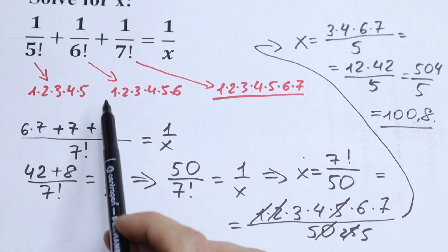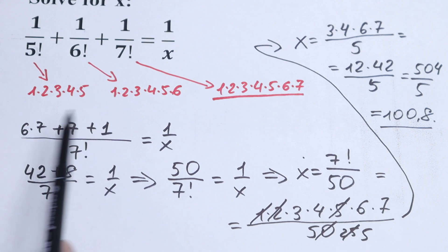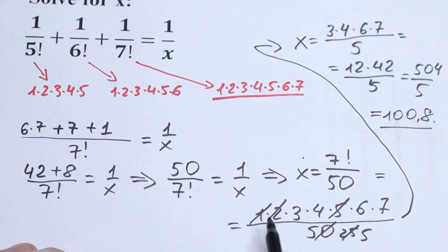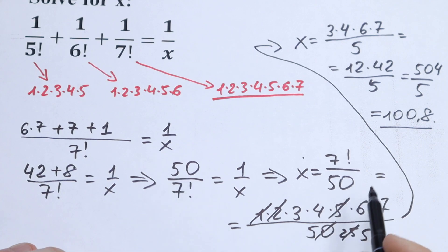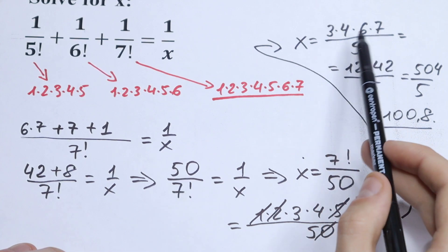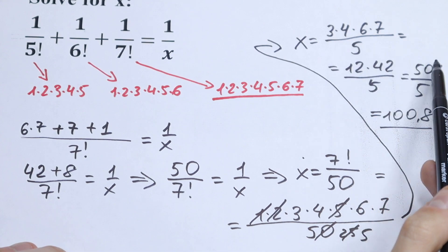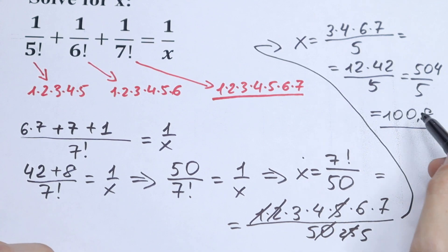First step: finding our common denominator, adding all of this in our denominator, and we get our equation. With our factorial, there's nothing hard — we write our factorial that way and cancel with 50 what we can. As a result, we have not a huge number: 12 times 42 is not huge, so we multiply and get our answer, 100.8.